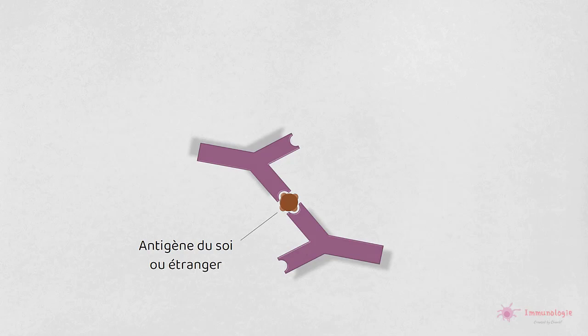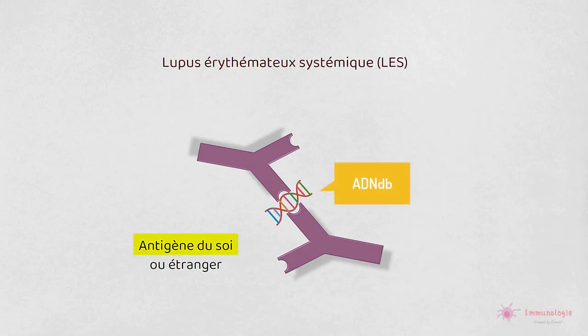Le lupus érythémateux systémique et la polyarthrite rhumatoïde en sont deux exemples. Dans le lupus, les complexes immuns sont constitués d'antigènes nucléaires tels que l'ADN et d'anticorps. Les principaux dommages se produisent au niveau des articulations, de la peau et des reins.